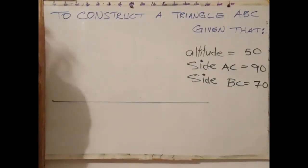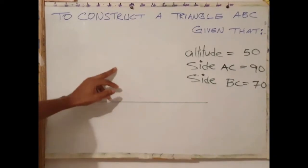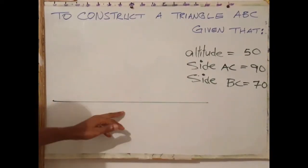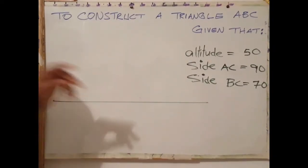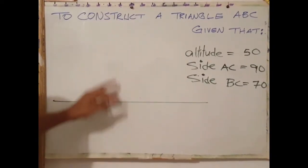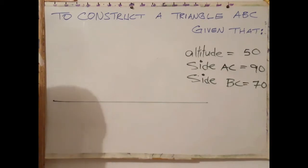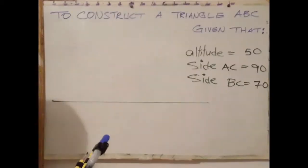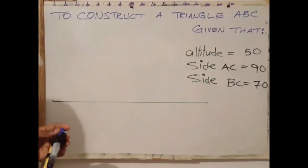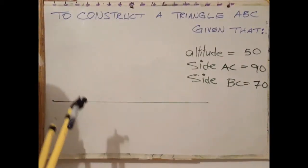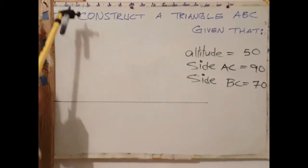The next step is to draw a parallel line to AB equivalent to the altitude. In this case the altitude is 50 millimeters.